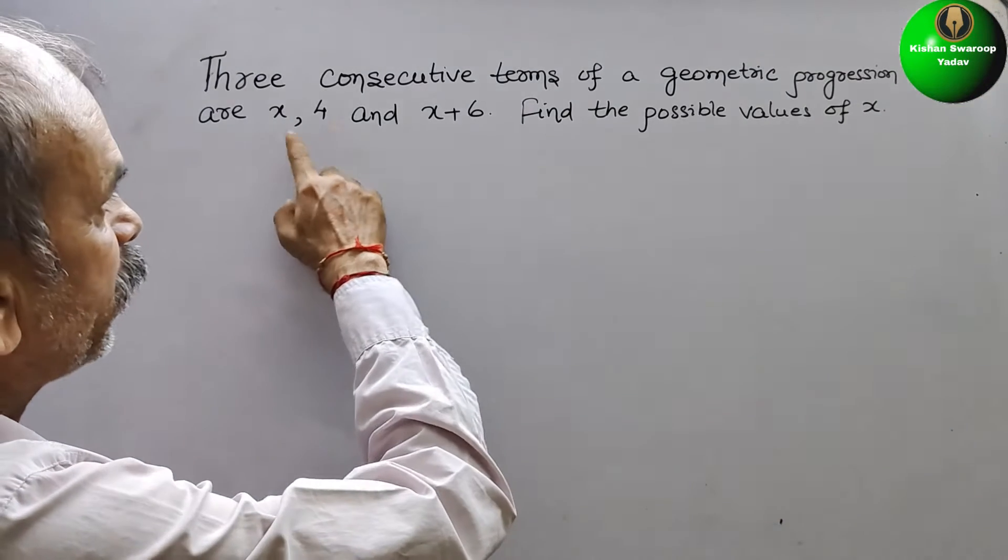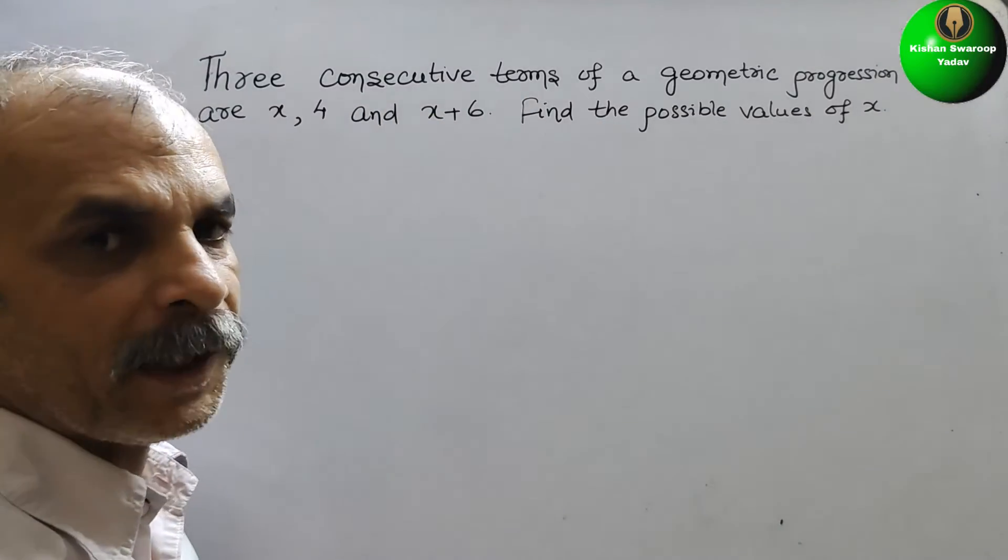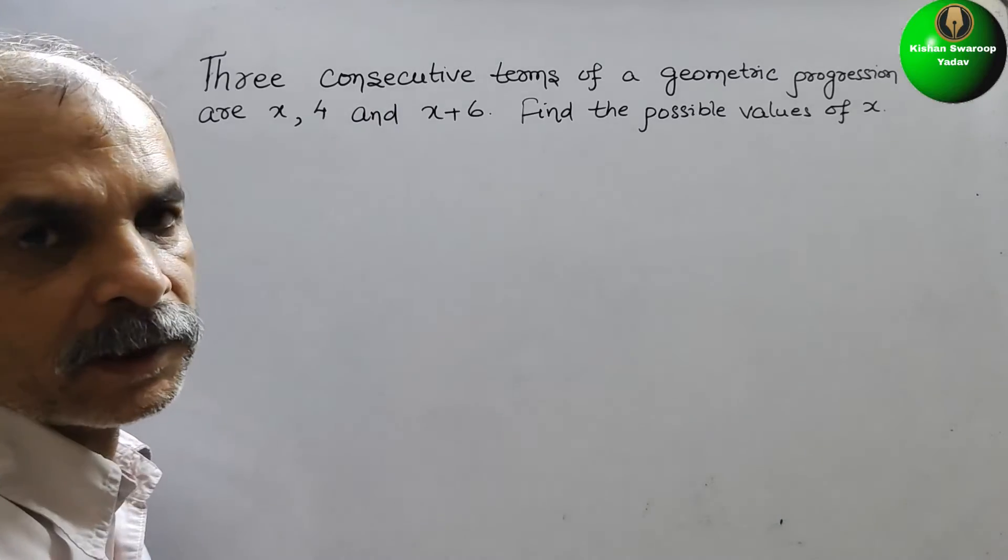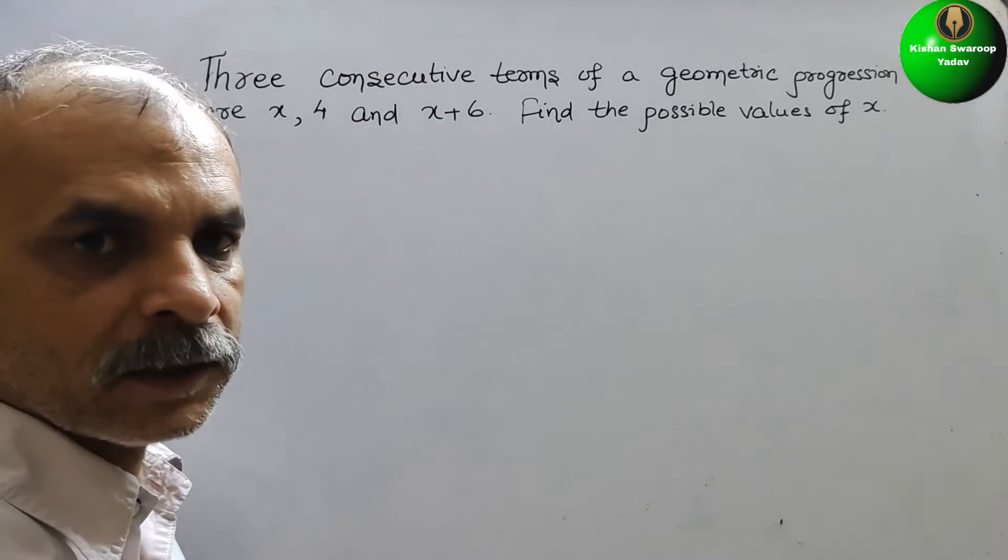Your question is: three consecutive terms of a geometric progression are x, 4, and x plus 6. Find the possible value of x.